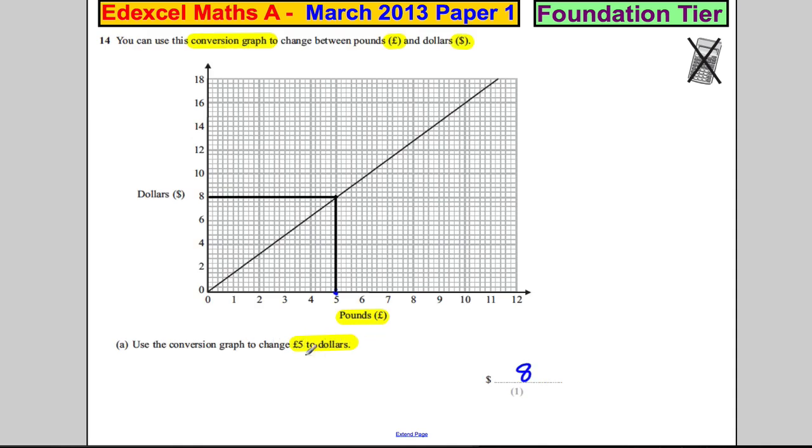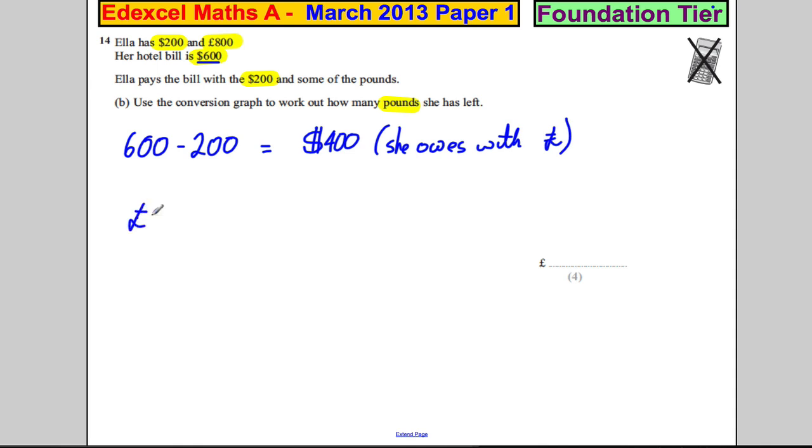Looking back on the conversion graph, think about what they told you. They told you 5 pounds was 8 dollars. So what is 400 dollars? Well, 40 dollars is five times as much, so that must be 25 pounds. So 400 dollars must be ten times more than that, which is 250 pounds.